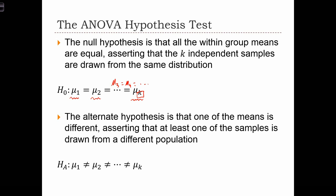The alternative hypothesis is that one of the means is different. And if one of the means is different, that means that at least one of the samples is drawn from a different population. So if a sample mean is different, it implies that one of the population means is different.